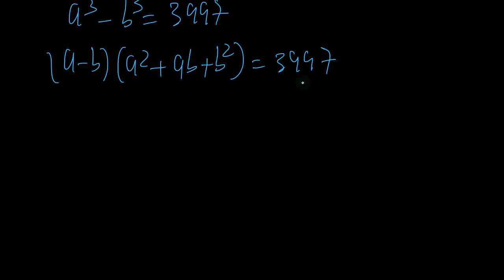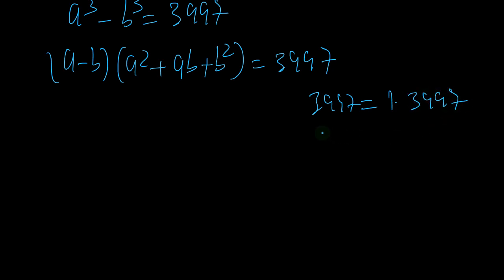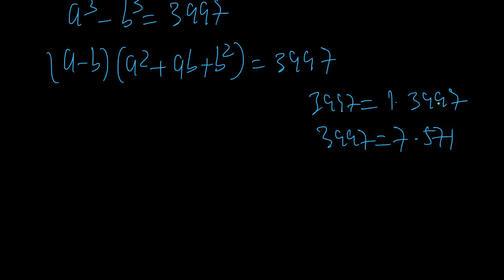We need to write 3997 as a product. We can write it as 1 times 3997, or as 7 times 571. I'm considering only positive numbers because the product has to be positive — I've already tried other combinations and they don't give the answer.